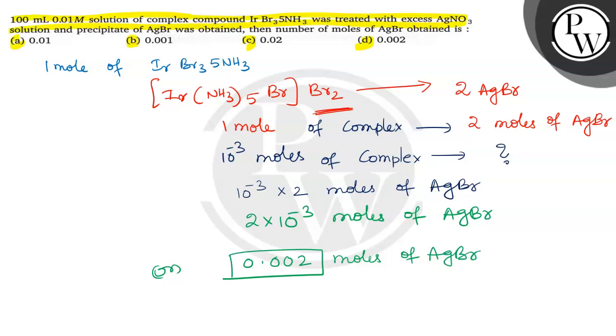So which option is correct? Option D. 0.002 moles of AgBr is correct. Option A wrong, Option B wrong, Option C also wrong. Only option D is correct. Hope you understood. Good luck.